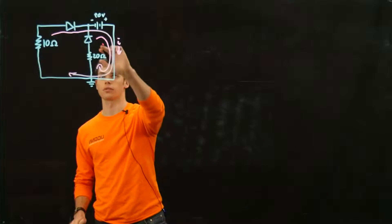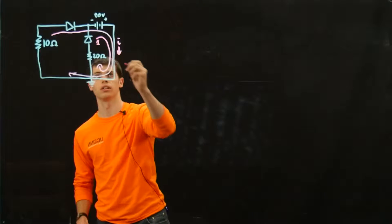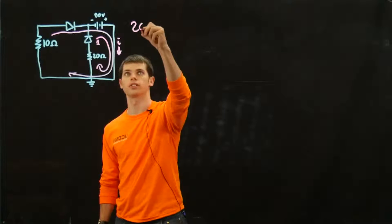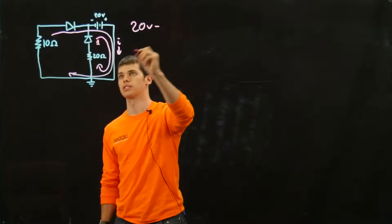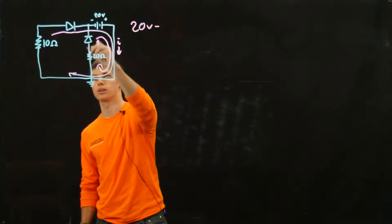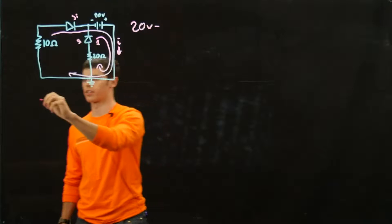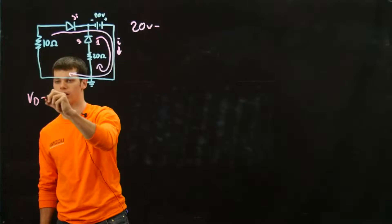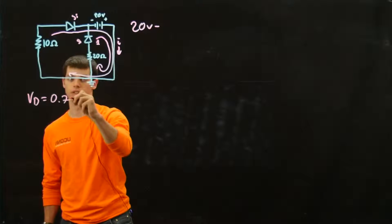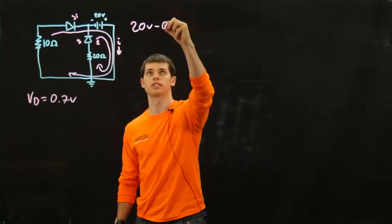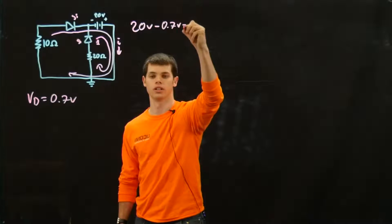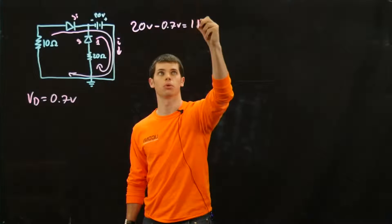So we'll start off with this loop, loop one. It's just going to be 20 volts, which is our voltage source, minus our diodes. Our two diodes, we're assuming are silicon, and we know that the voltage drop across the diode for silicon is equal to 0.7 volts. So 20 minus 0.7 volts equals 19.3 volts.